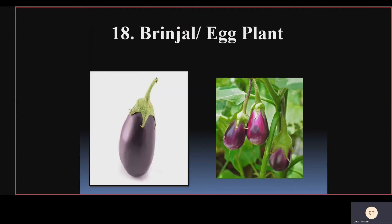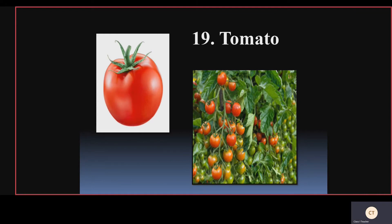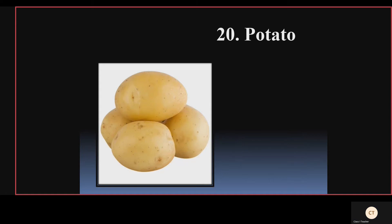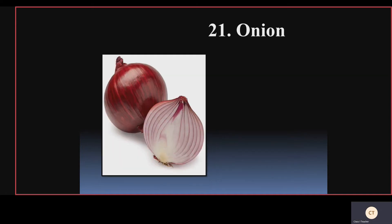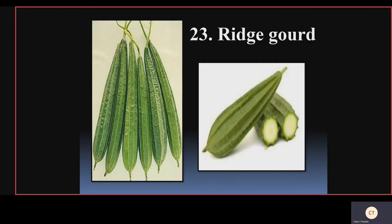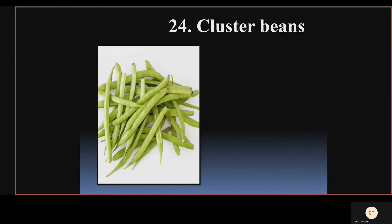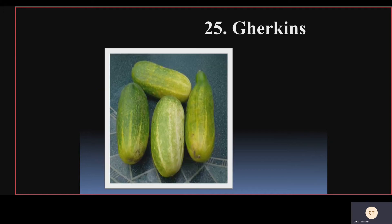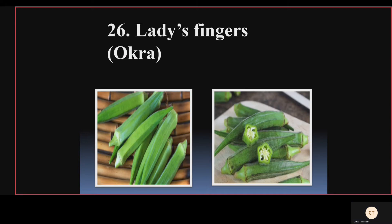Brinjal - we can also call it eggplant. Tomato. Potato. Onion. Bitter gourd. Ridge gourd. Cluster beans. Ladies fingers - it is also called okra.